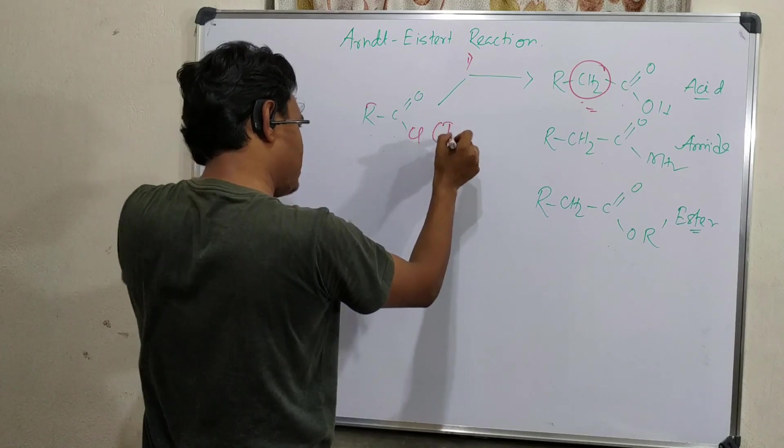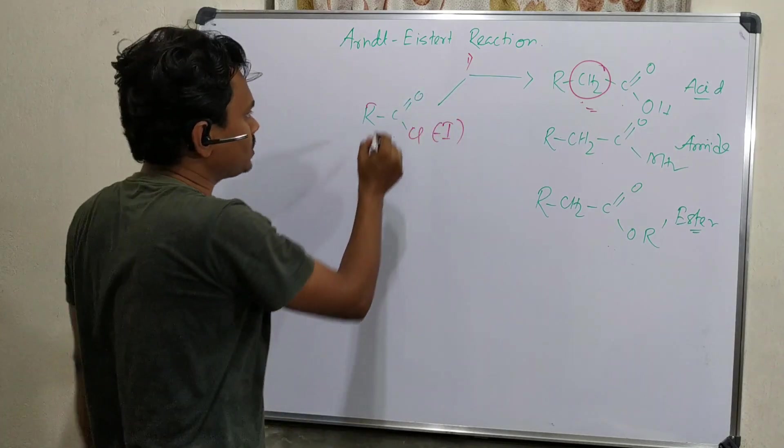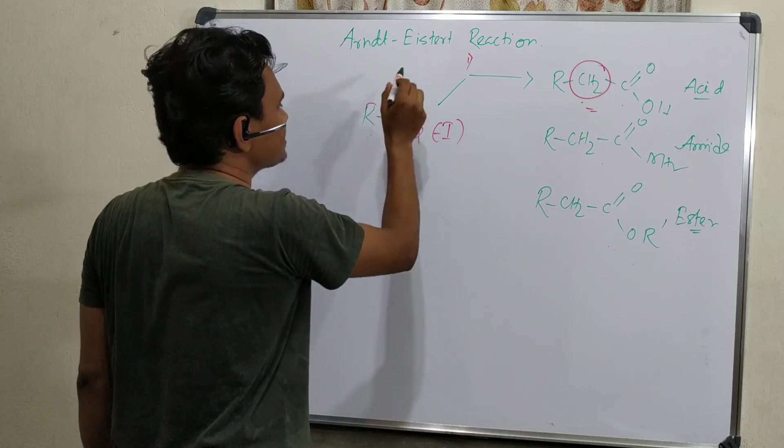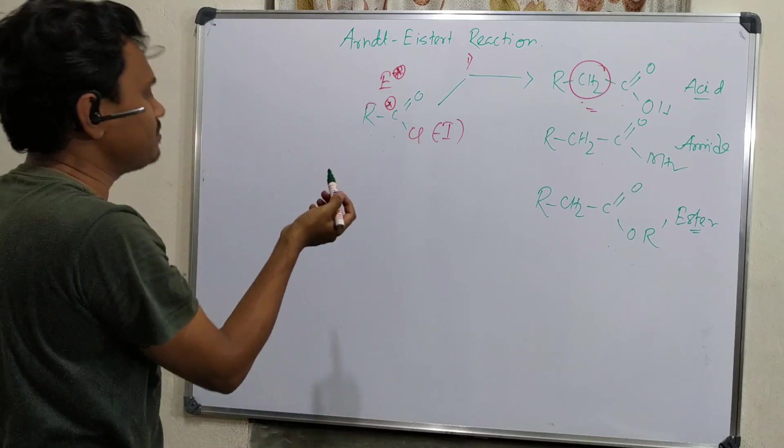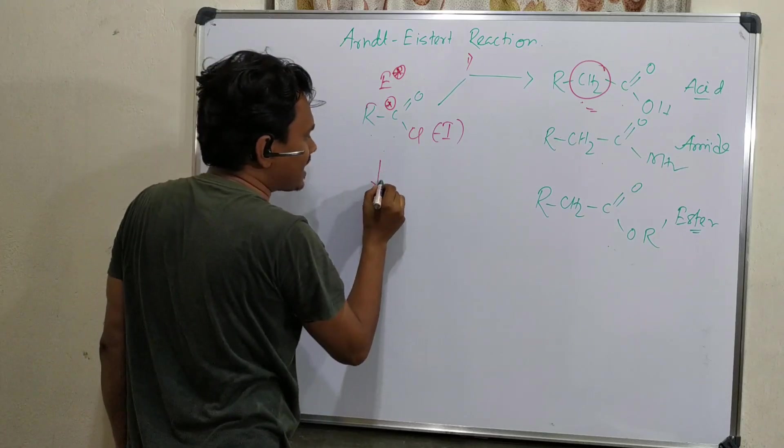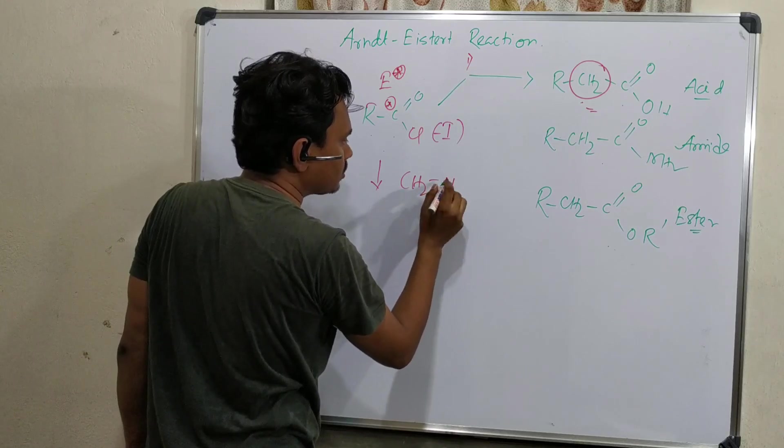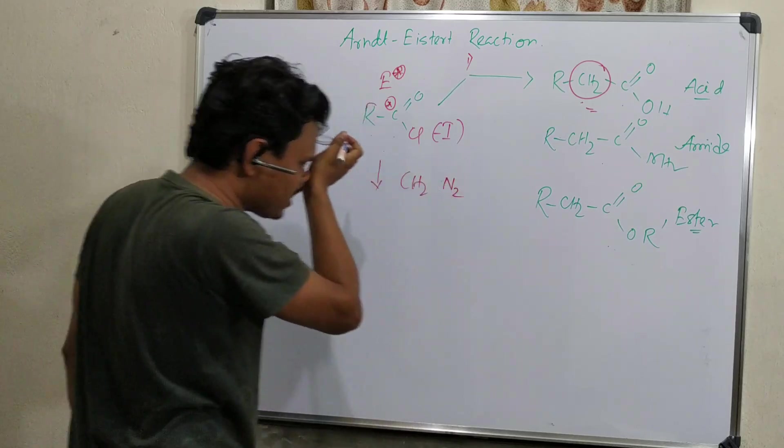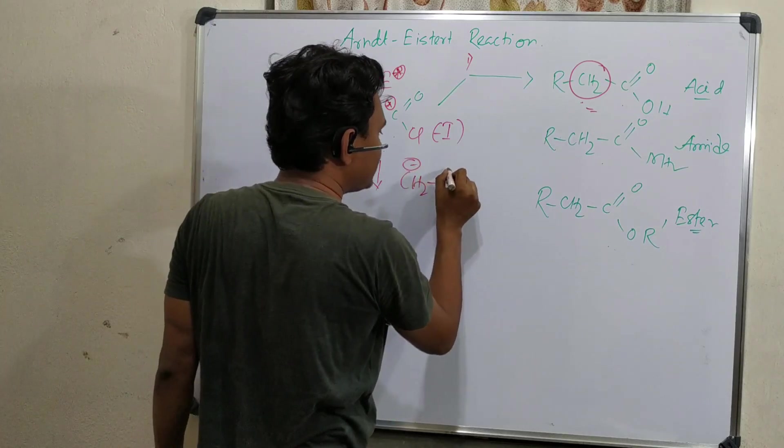What happens? This acid chloride right now is more reactive than carboxylic acid itself, because if this acid is converted into corresponding acid chloride, then chlorine is imposing -I effect and oxygen also has -I effect. So this carbon becomes tremendously electrophilic, very high electrophilic.